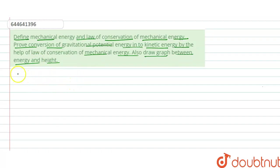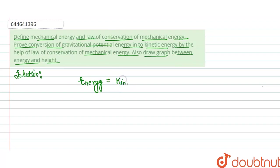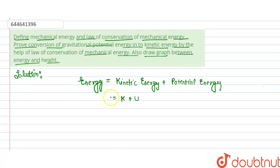So we define mechanical energy and the law of conservation. We know that energy equals kinetic energy plus potential energy, that is U. So we write down that energy E equals K plus U. This is the energy formula.